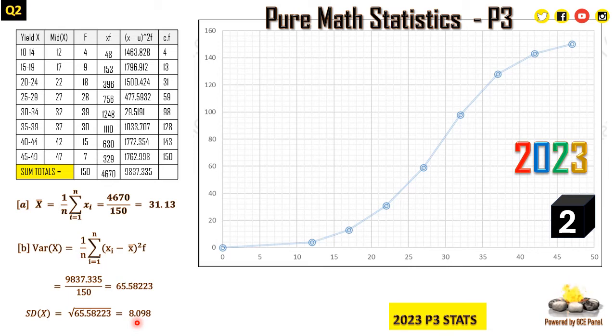Now the part C says we should make a cumulative frequency curve for this data. So here, these are the cumulative frequencies: the first frequency is 4, 4 plus the next frequency 9, that's 13; 13 plus 18 is 31; 31 plus 28 is 59; 59 plus 39 is 98; 98 plus 30 is 128; 128 plus 15 is 143; 143 plus 7 is 150. At the end of your cumulative frequency, if you don't arrive at 150, it means you are wrong, because you were told at the beginning that we have a total of 150 fruits.